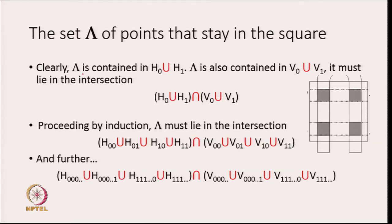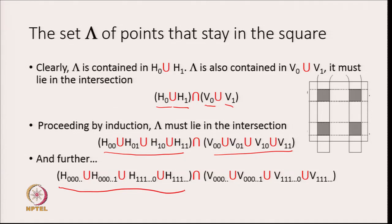The set of points that will stay in the square forever can now be deduced by construction. At stage 1, points that will stay in the future must be in h0 or h1, must have come from v0 or v1, and therefore must lie in the intersection of (h0 union h1) with (v0 union v1). One step further back they must lie in a union two steps back on both sides — forward in time and backward in time.